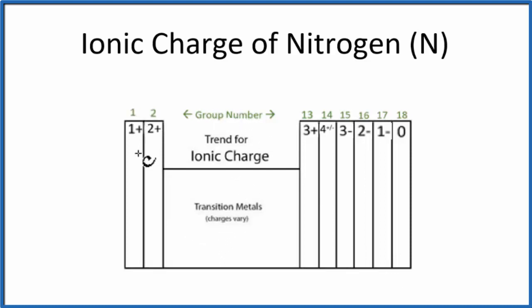In group 1 we have a 1 plus charge for the ionic charge. In group 2, these are 2 plus. Skip the transition metals, they vary. Then in group 13, also called 3A, those are 3 plus.